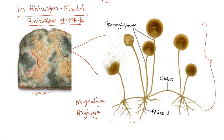There are three types of hyphae in this mycelium. First, you have the stolons, which grow along the surface of the substrate. Then there are rhizoids that grow into the substrate for anchorage and absorption.